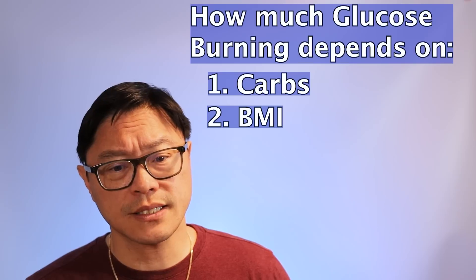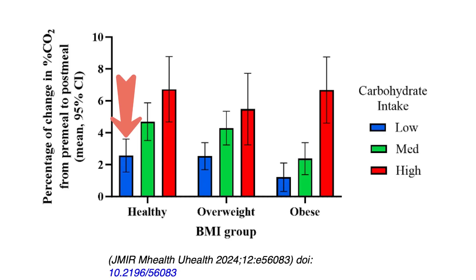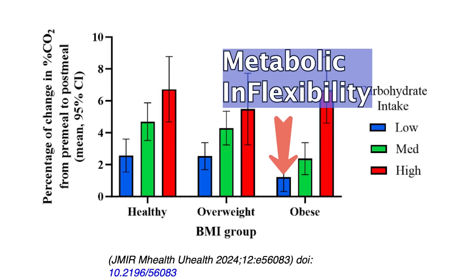So if you look at this study and look at the people who are eating a low carb meal in blue, the RER goes up only a little bit in the healthy group because they're not eating a lot of carbs. So you're not increasing your carb burning significantly. But look at the obese group. It barely moves at all. That means that even as you're taking those carbohydrates in, your body has not shifted to burning those carbs, which is really what it's supposed to do.